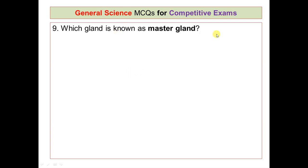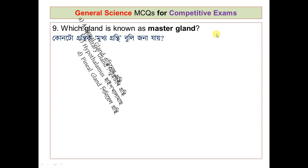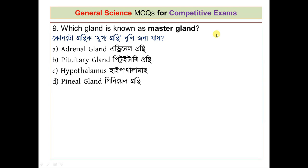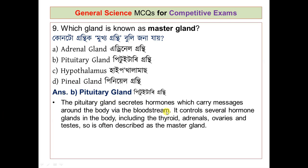Question number 9: which gland is known as the master gland? The options are adrenal gland, pituitary gland, hypothalamus, and pineal gland. The correct answer is the pituitary gland. It secretes hormones that carry messages around the body via the bloodstream and controls several hormone glands including the thyroid, adrenal, ovaries, and testes — so it is often described as the master gland.